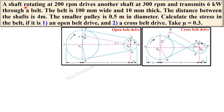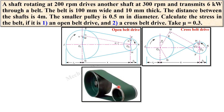Let us understand the description again. A shaft rotating at 200 rpm — let us say this is the driver — drives another shaft at 300 rpm and transmits 6 kilowatt through a belt. The belt is 100 mm wide and 10 mm thick. The distance between the shafts is 4 meters, that is x = 4 m.